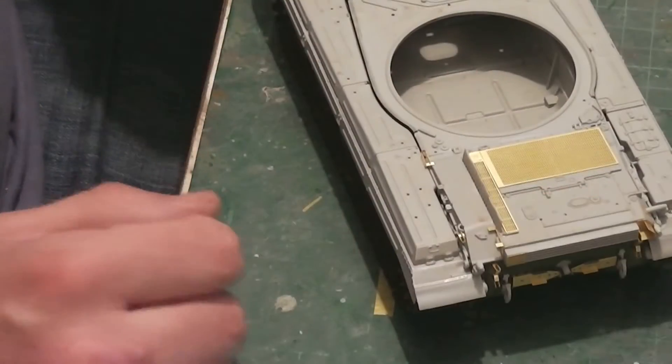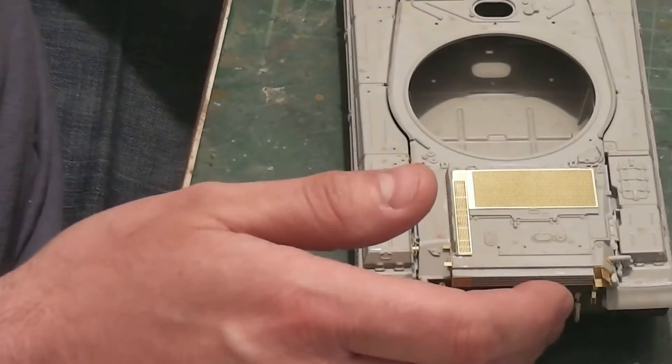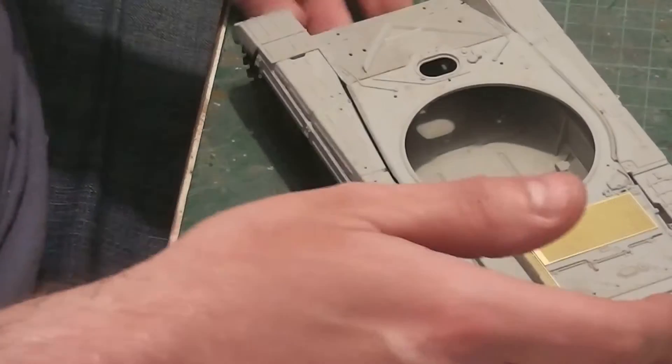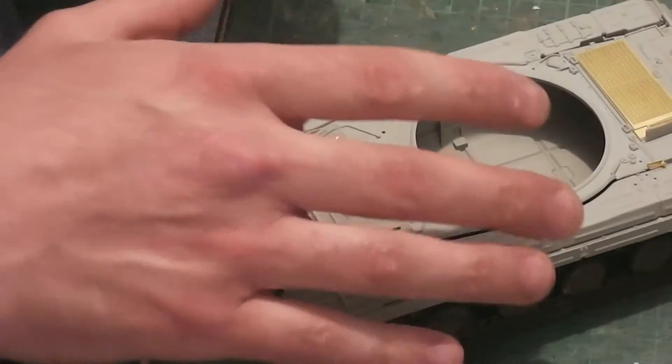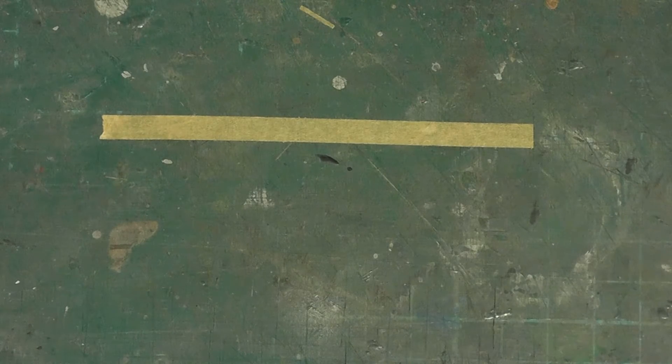Well, hi again. This is the ongoing T64 which I'm building, and one of the less good bits about the model is the unditching log for the rear.